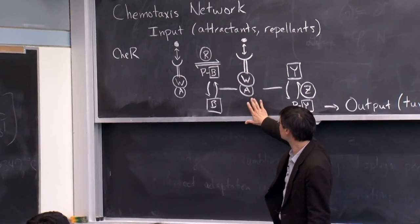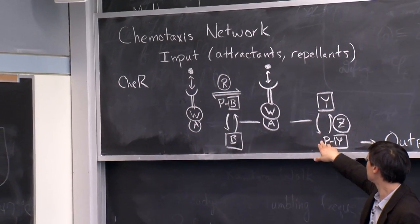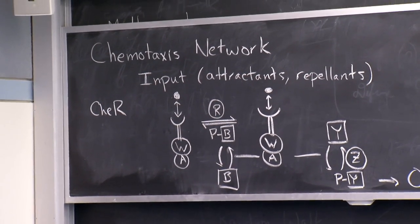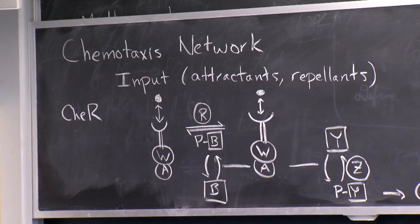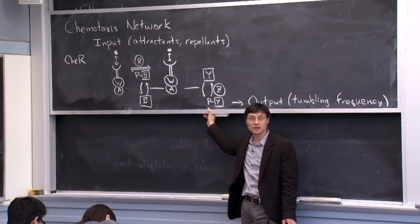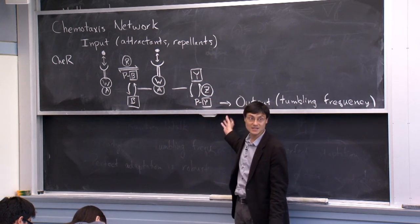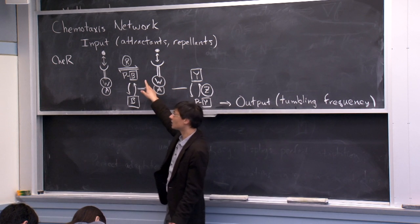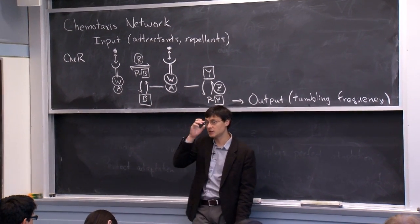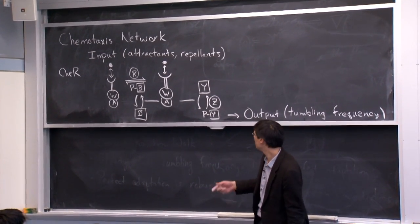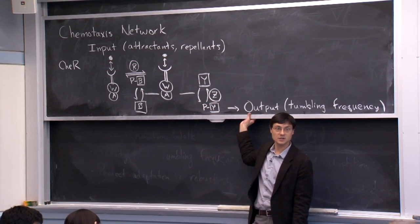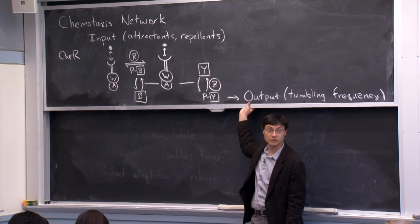The key feature is that CheA can phosphorylate CheY. Phosphorylated CheY then yields the output of increased tumbling frequency. There are also other components: CheZ actively dephosphorylates CheY, so there's constant cycling. Similarly, methyl groups are constantly being added by CheR and removed by phosphorylated CheB. The system looks wasteful because of all these futile cycles, but the only reason they're there is because they're doing something useful.